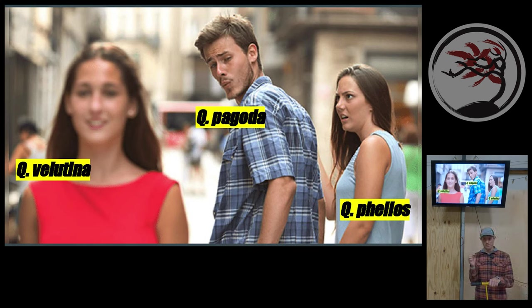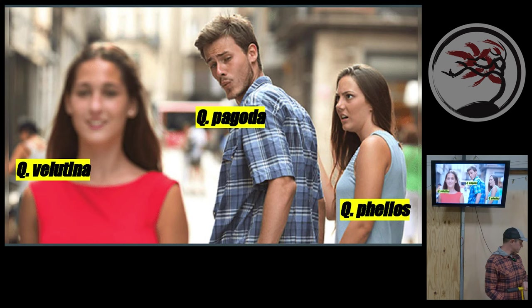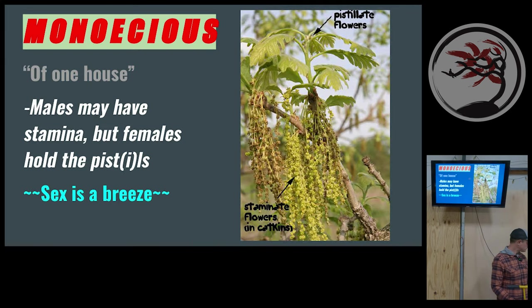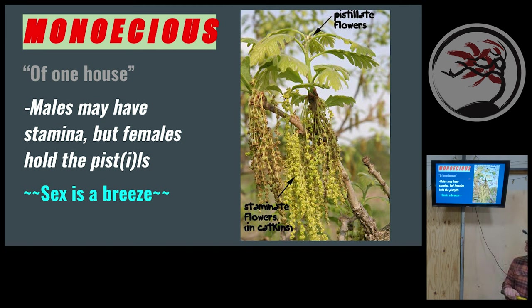As a generalization, white oaks have rounded lobes and red oaks have a bristle tip — sometimes you have to look really closely, like with Quercus phellos (willow oak). Cherry bark oak hybridizes with both black oak and willow oak, as well as others. Oaks in general are monoecious, which means 'of one house' in Greek — they have both male and female parts on the same plant. We call those staminate and pistillate flowers.